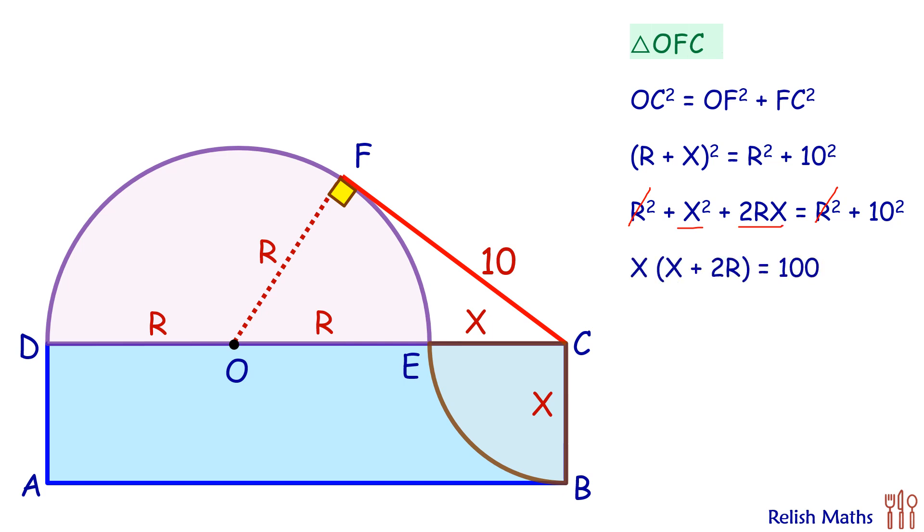So we have X times X plus 2R is 100. Now here X, if you'll see, X is nothing but BC, and X plus 2R, so this is your R, R, and X, so X plus 2R is nothing but DC. And BC times DC is what? The area of rectangle.